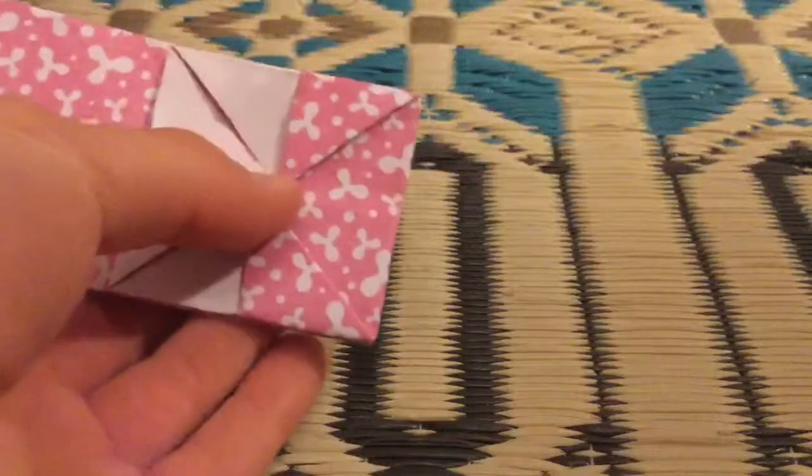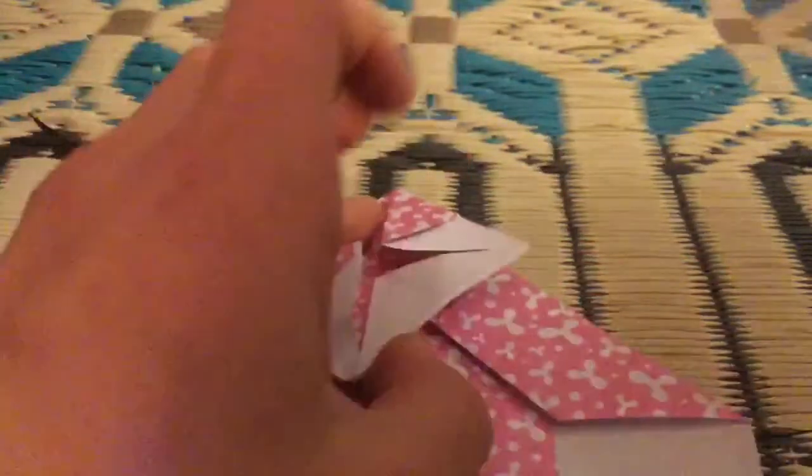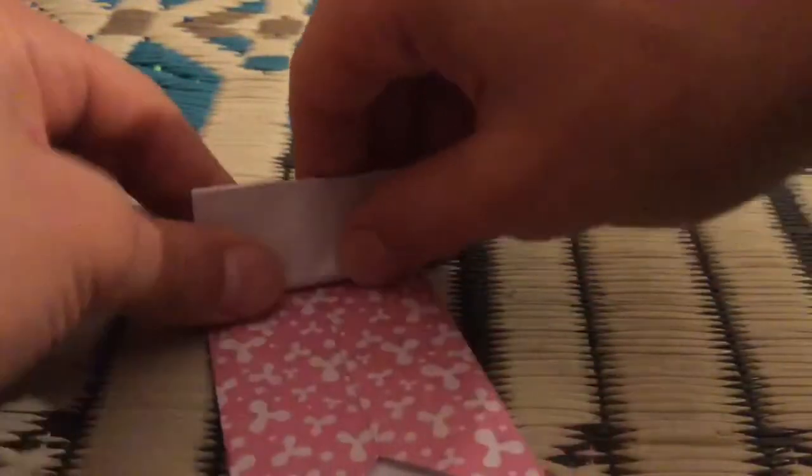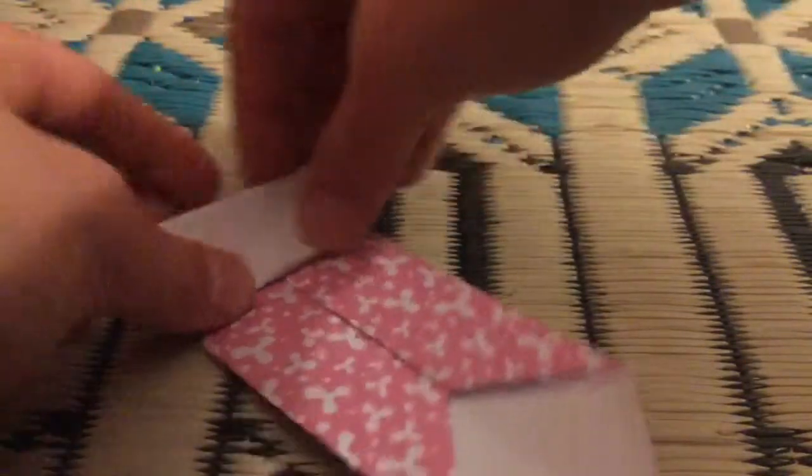Now you can see this is now split up into two sections, the white section and the pink section. We're going to take the white section and fold it all the way back.